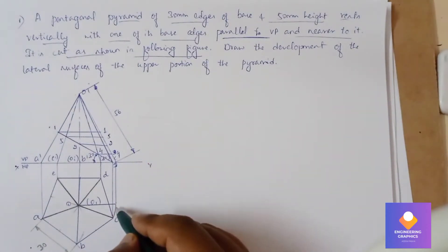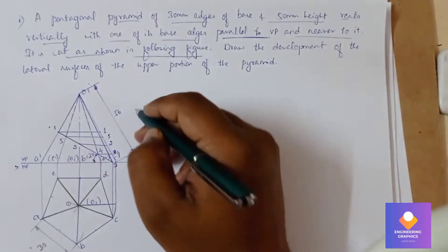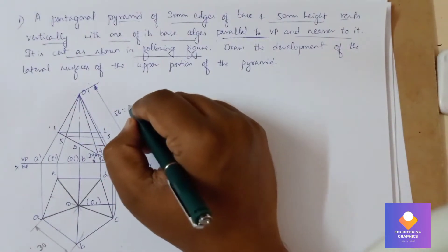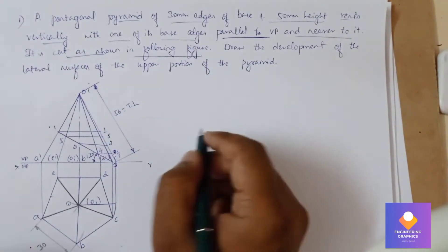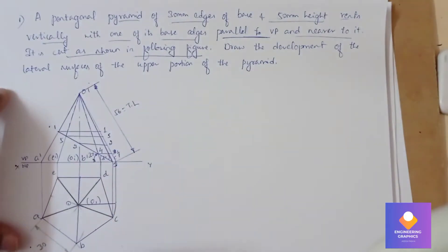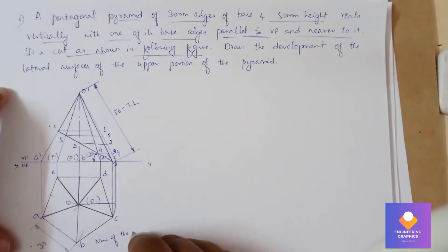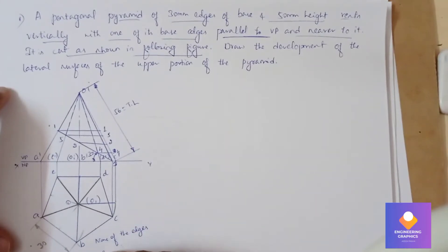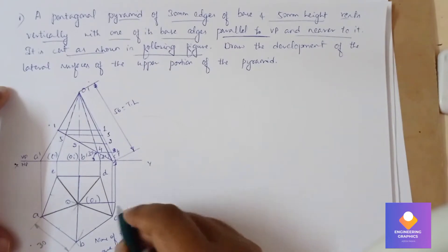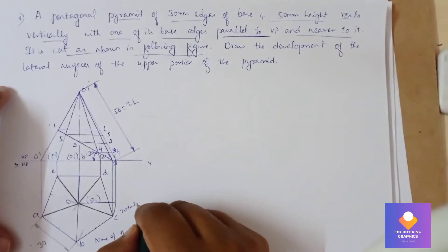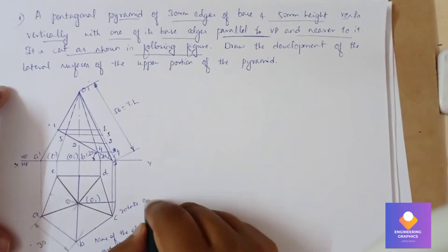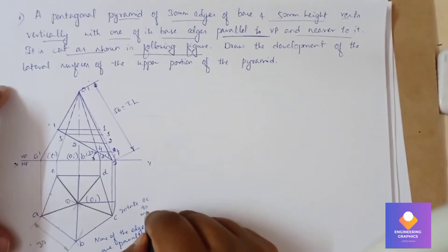Here you can see edge OC is not parallel, so we have to rotate it and make it parallel. In the top view, none of the edges OC, OB, OD are parallel here, so we have to make it parallel by rotating OC — rotating OC and making it parallel.